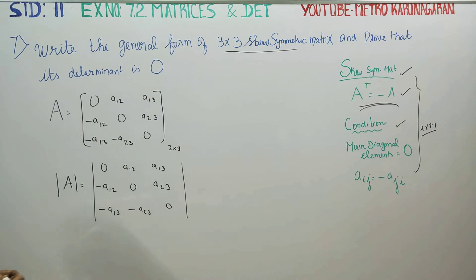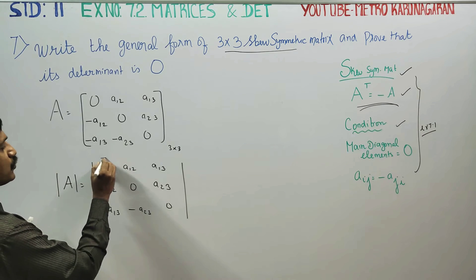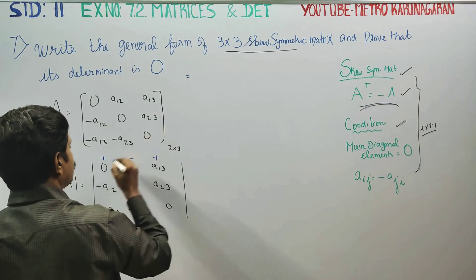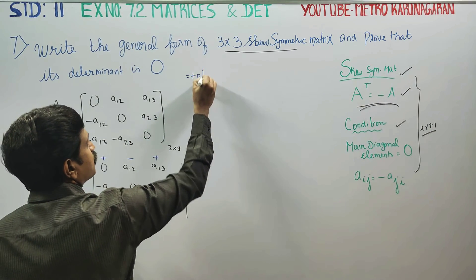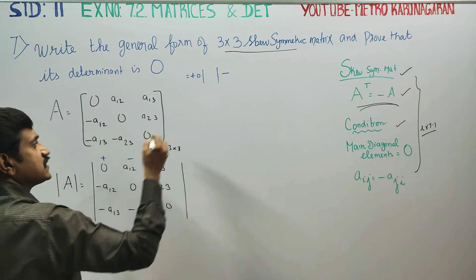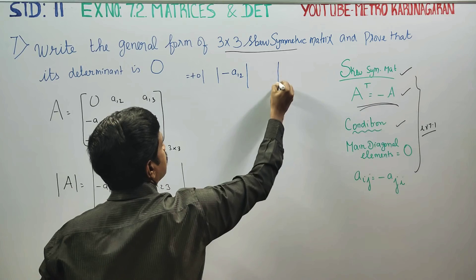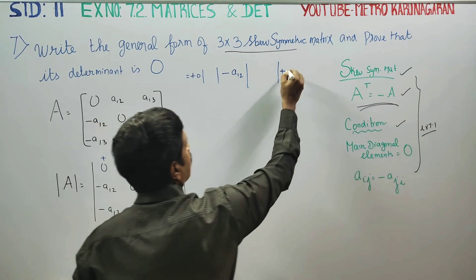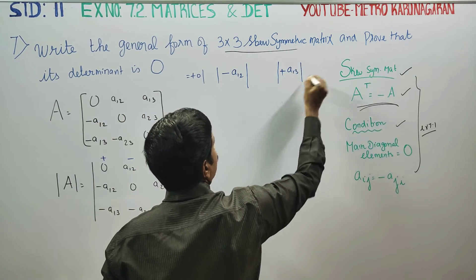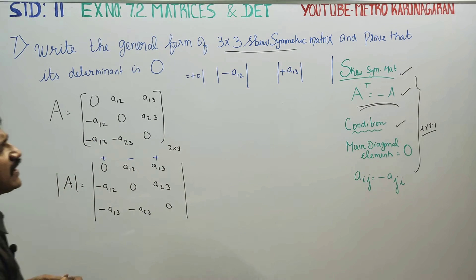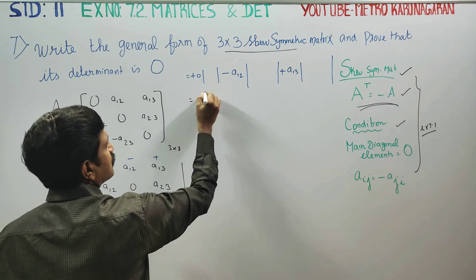Now we shall expand the determinant and prove that the answer is 0. Expanding along the first row with signs plus, minus, plus: the determinant equals plus 0 into its minor, minus A12 into its minor, plus A13 into its minor. Since 0 into anything equals 0, the first term vanishes.